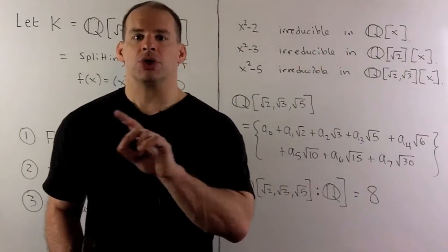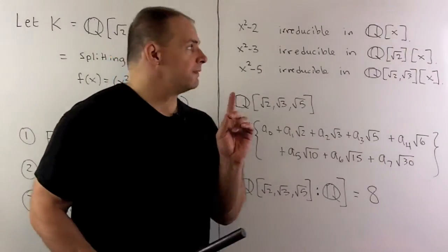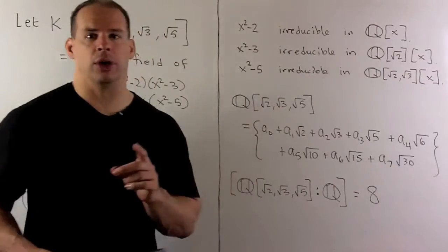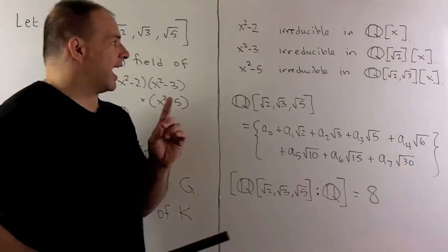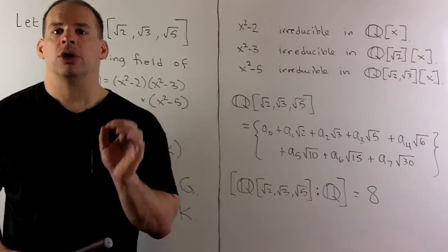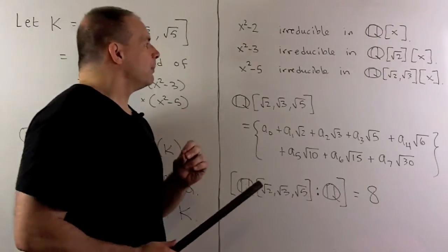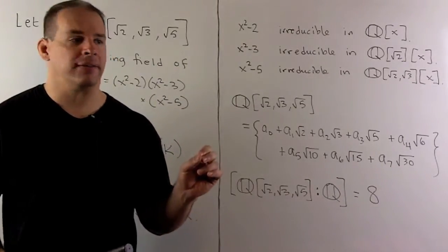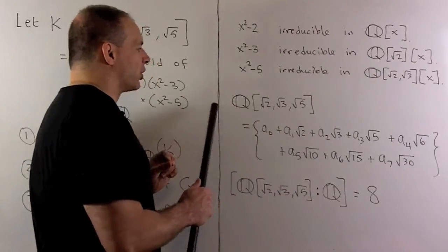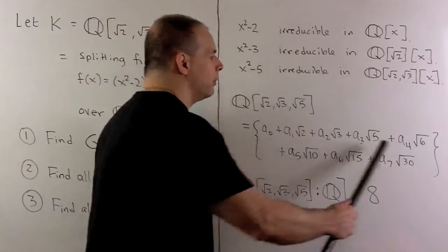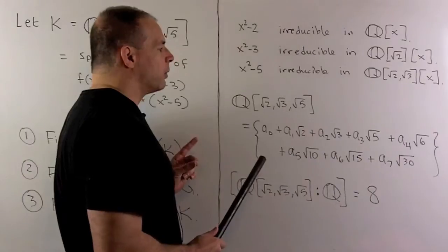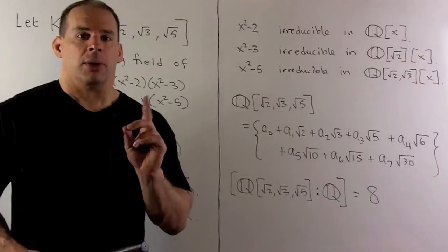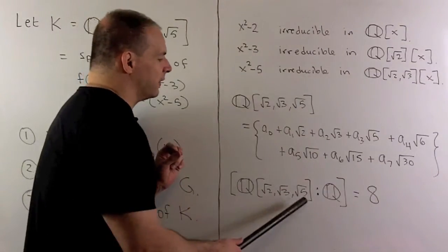We should sort out what's happening with K. Starting from Q: x² - 2 is irreducible over Q, so we adjoin √2. Then x² - 3 is irreducible over Q(√2), so we adjoin √3. Finally, x² - 5 is irreducible over Q(√2, √3), so we adjoin √5. Sorting all that out, K has 8 basis elements over Q, so our splitting field is a degree-8 extension of Q.